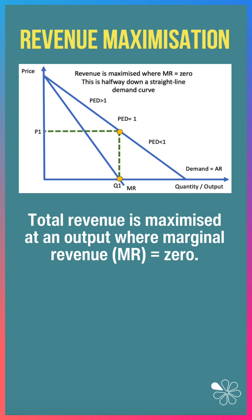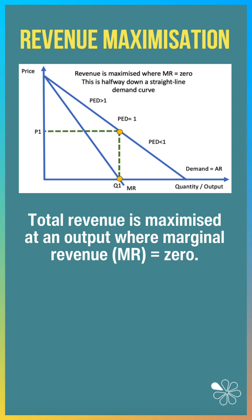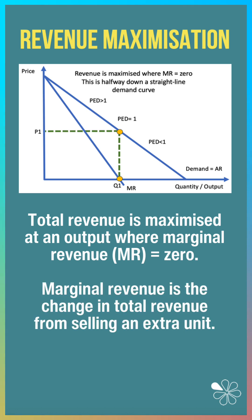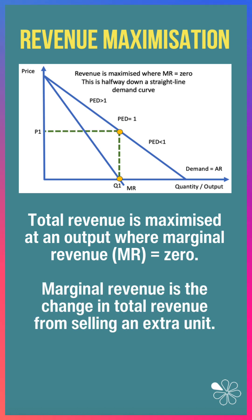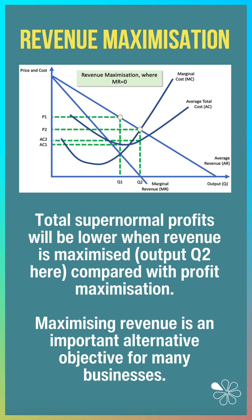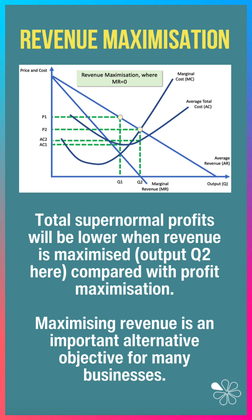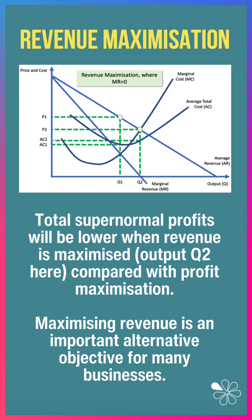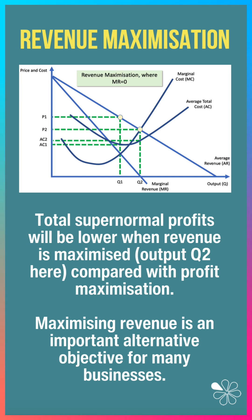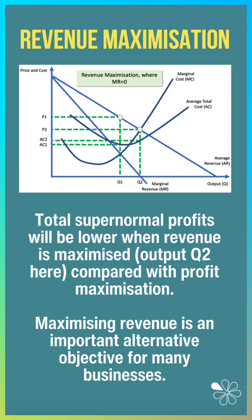Here's the diagram. Total revenue is maximised when marginal revenue is zero — that is, the change in total revenue from selling an extra unit. Typically, total profits will be lower when revenue is maximised here at output Q2, compared with Q1 profit max.